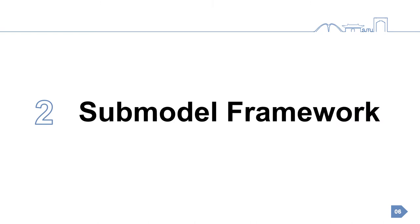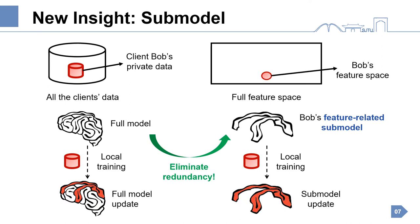To improve efficiency, we propose a submodel framework. We observe that the input data of a client normally involves a small subspace of the full feature space. Thus, the client often needs only part of the full model that is related to its features, called a submodel. In other words, after local training, only the submodel will be updated.